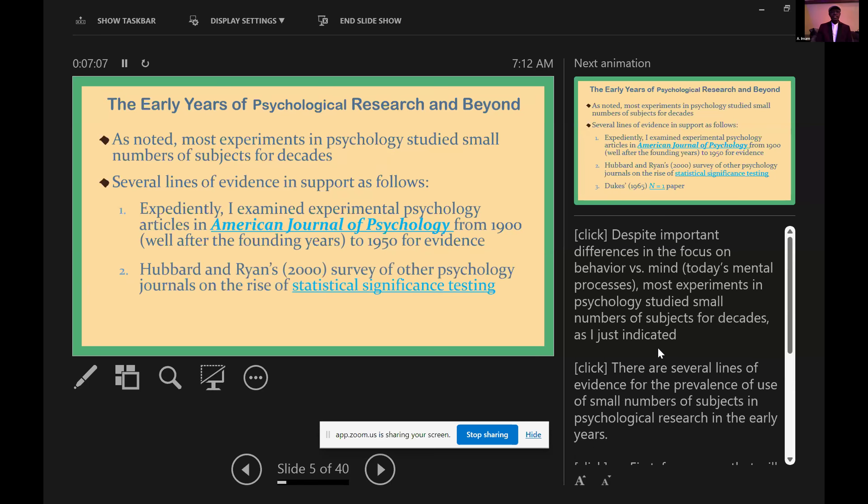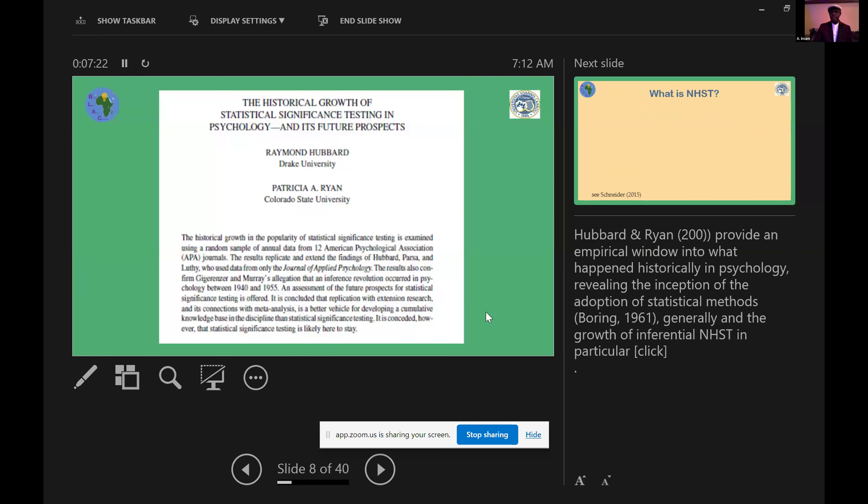How then did inferential statistics creep into psychological research? Hubbard and Ryan's survey of other psychology journals provide a window into what happened. They provide an empirical window into what happened historically in psychology, revealing the inception of the adoption of statistical methods generally and the growth of inferential null hypothesis statistical testing in particular.